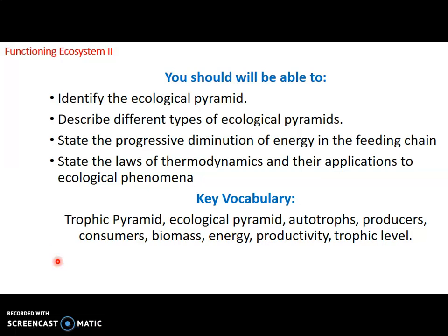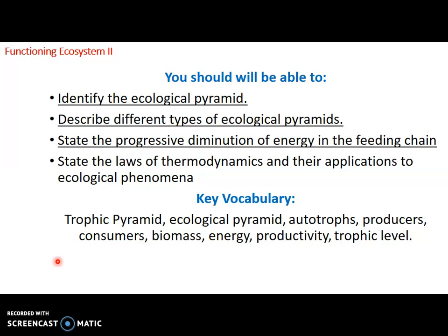We will continue our last week's lesson on the functioning of ecosystems. At the end of this lesson, you should be able to identify the ecological pyramid, describe different types of ecological pyramids, state the progressive diminution of energy in the feeding chain, and state the law of thermodynamics and its application to ecological pyramids. Our key vocabularies are: trophic pyramid, ecological pyramid, autotrophs, producers, consumers, biomass, energy, productivity, and trophic level.